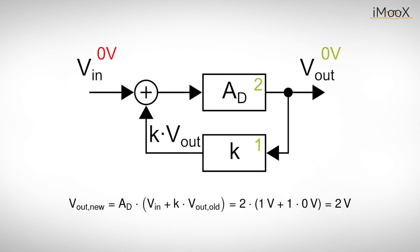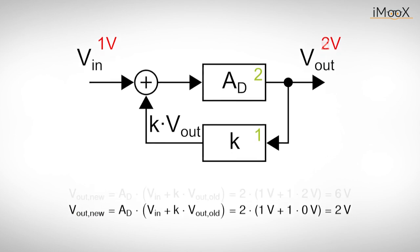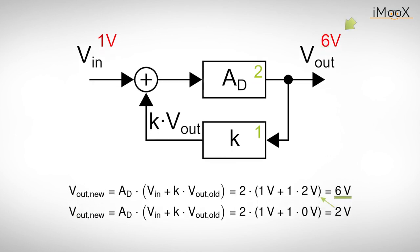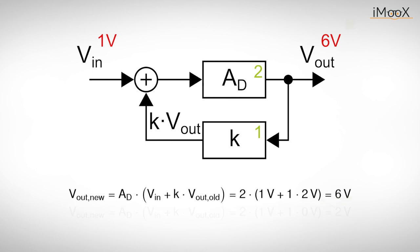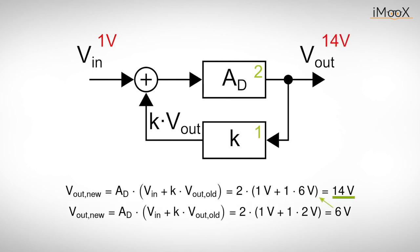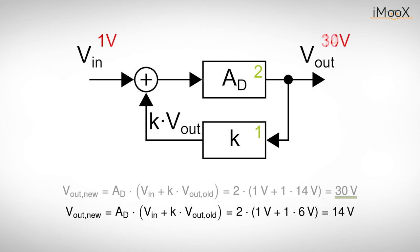Let us see what happens if we increase the input voltage from 0 to 1 volts for example. The output voltage can be described by this formula, where Vout new is the output voltage at exactly this time instance, and Vout old is the output just a little bit before that. But in the next instance the output voltage keeps rising. This process continues, and Vout is approaching infinity.